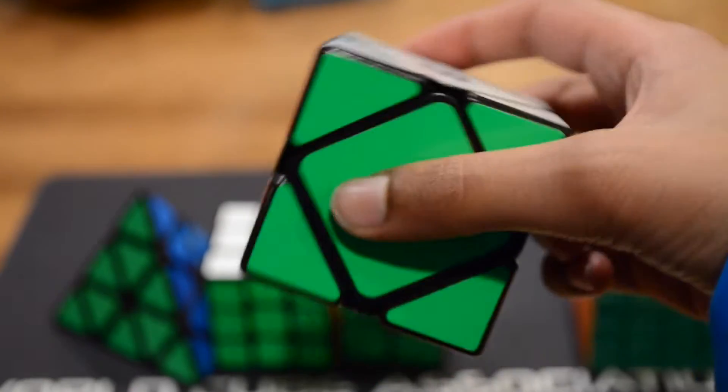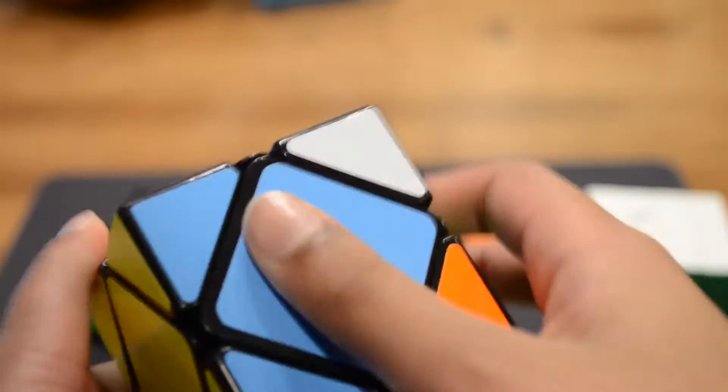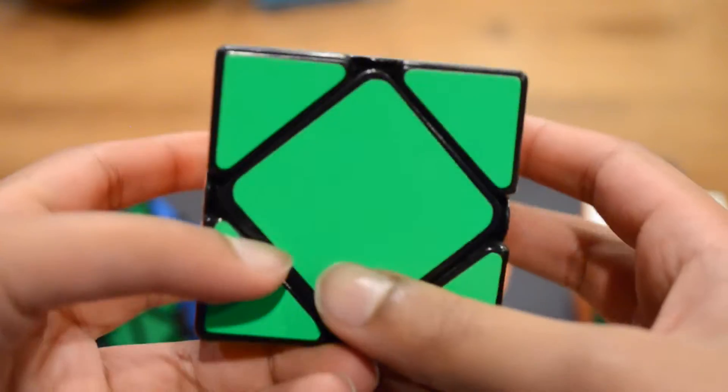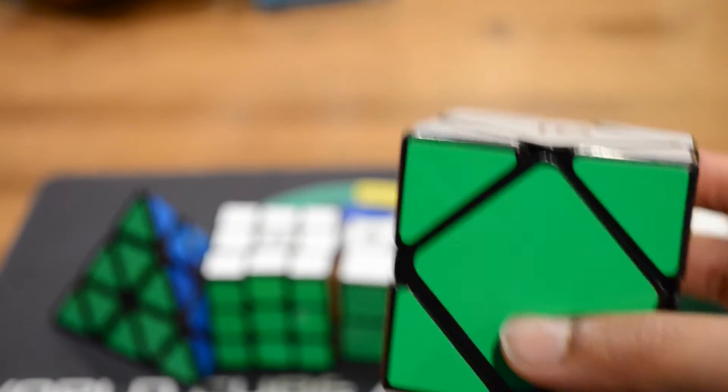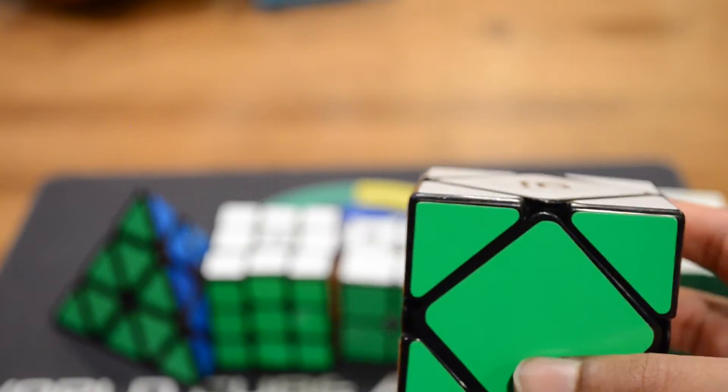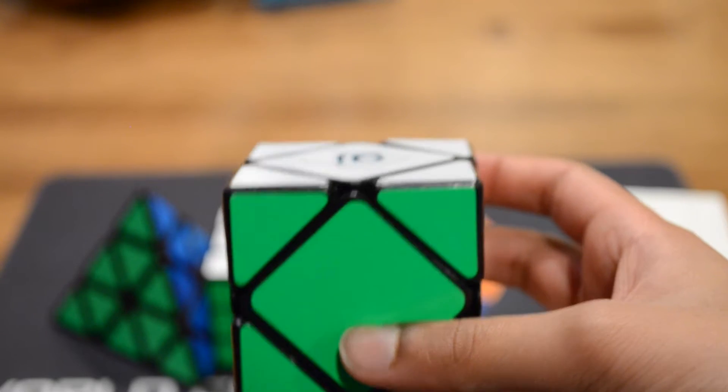So now on to Skewb. This is the QiYi Skewb. I really like it and I just want a sub 8 average and a sub 6 single, because I always fail at Skewb and I'm hoping this competition will not be the same.